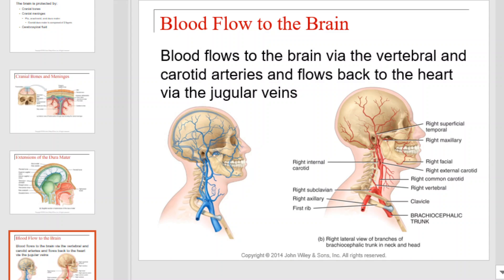Blood flow to the brain. Our most vital organ demands a massive amount of blood. Blood flows to the brain via the vertebral and carotid arteries and flows back to the heart via the jugular veins. The blood flow through the brain and vital structures associated with it are illustrated at the bottom of this slide.